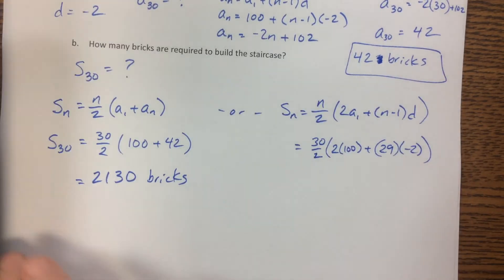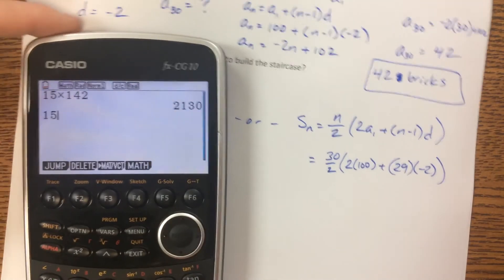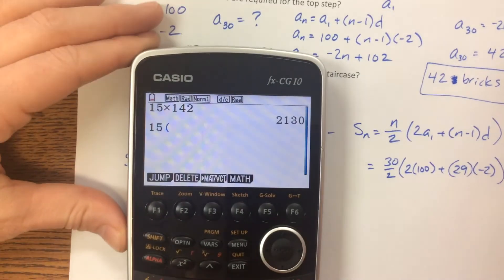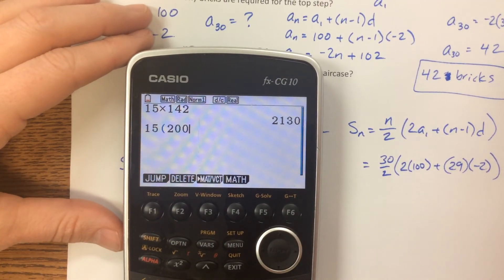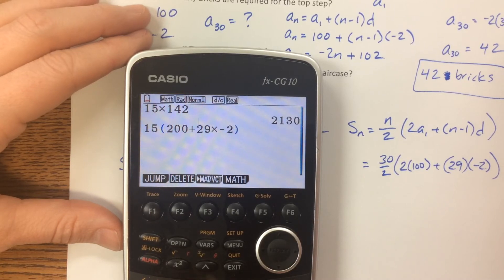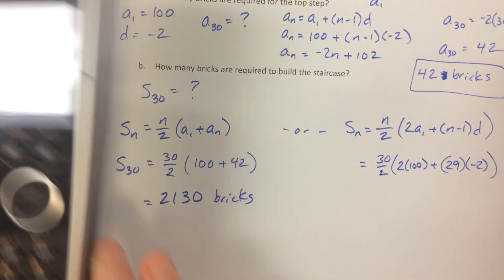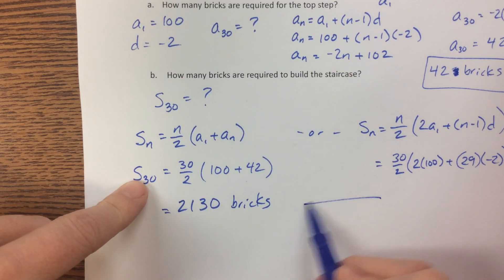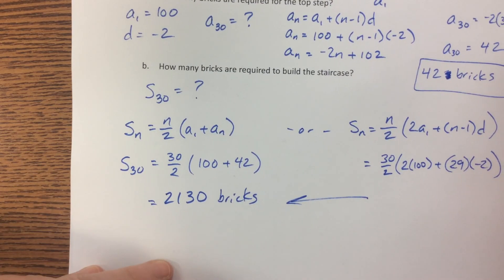You clean that up. All right. 15 times 200 plus 29 times negative 2. I don't know, however you want to type that in. There we go. So that's that same answer. So far so good? So good.